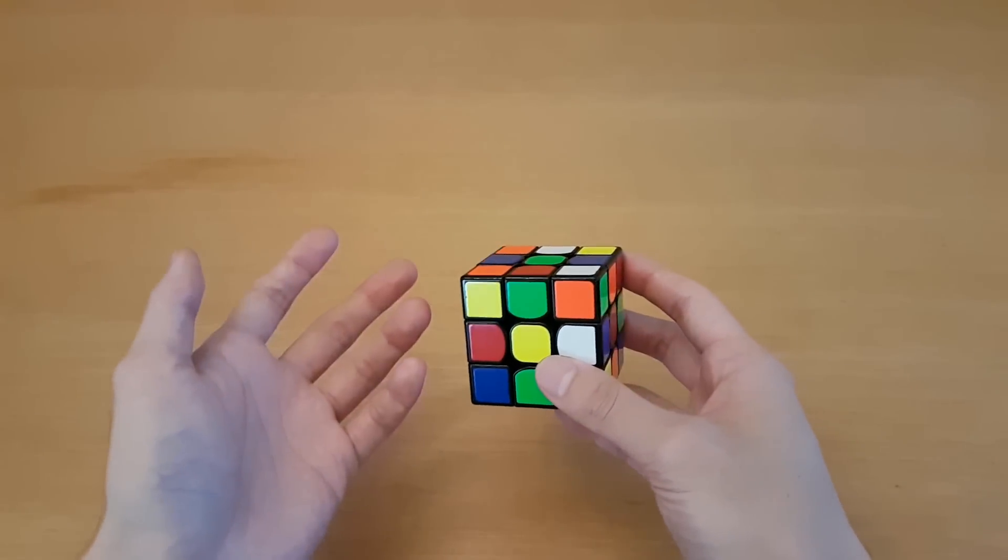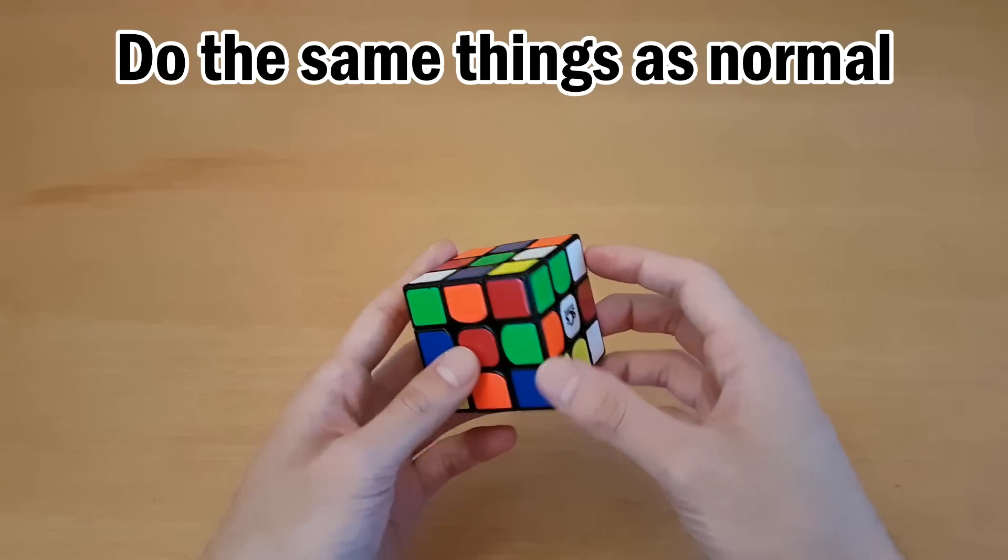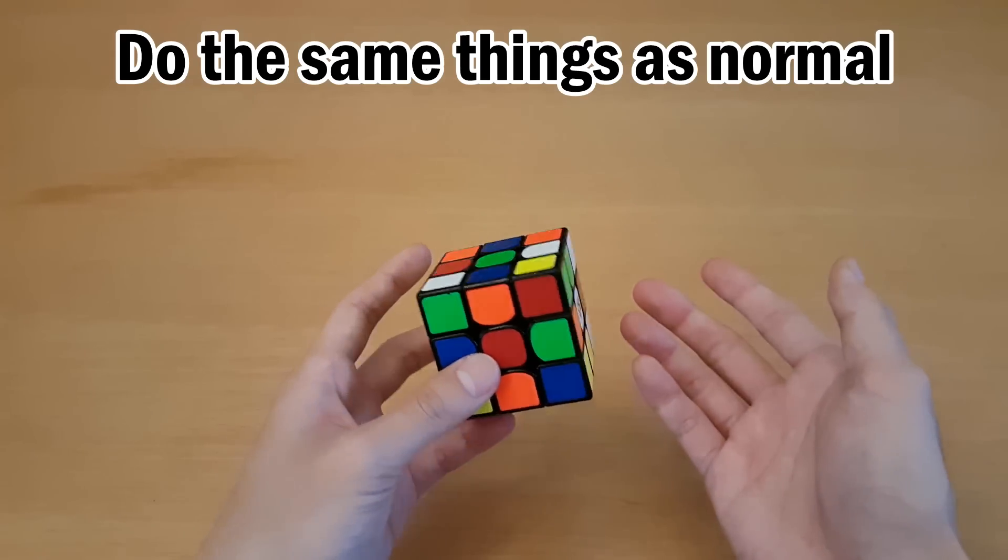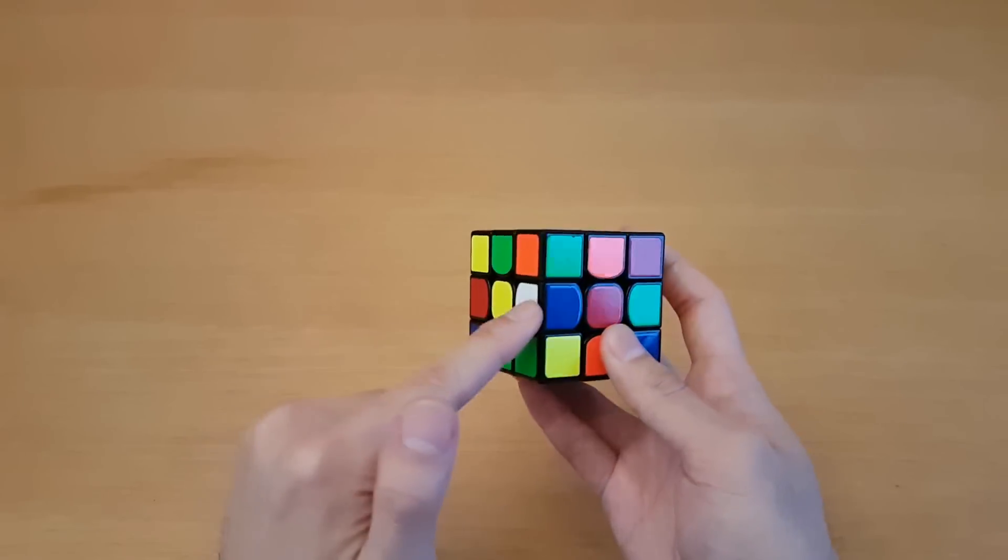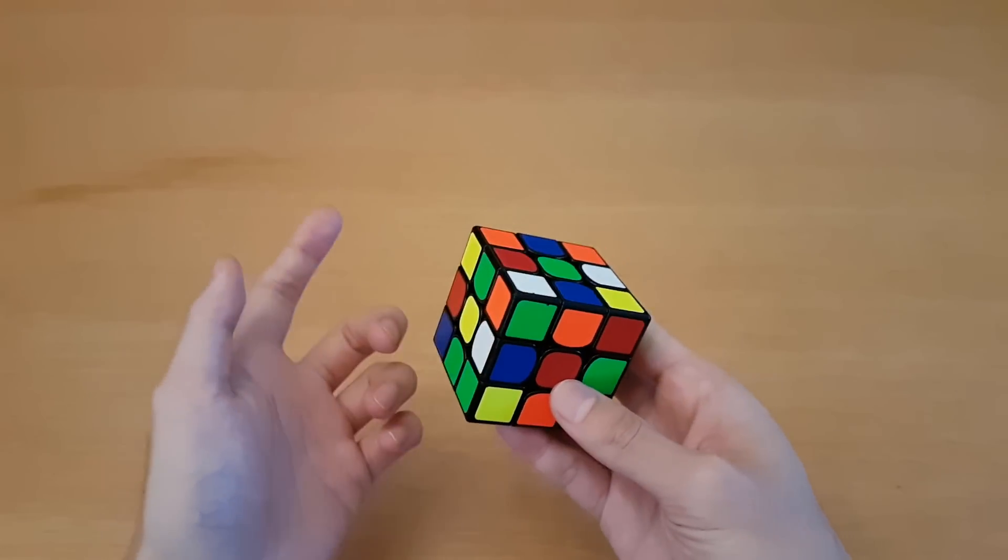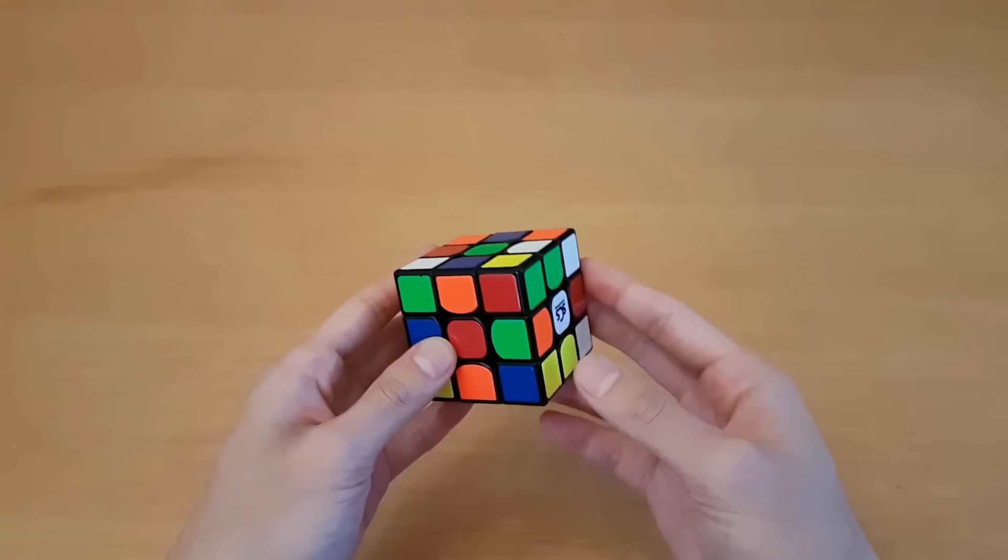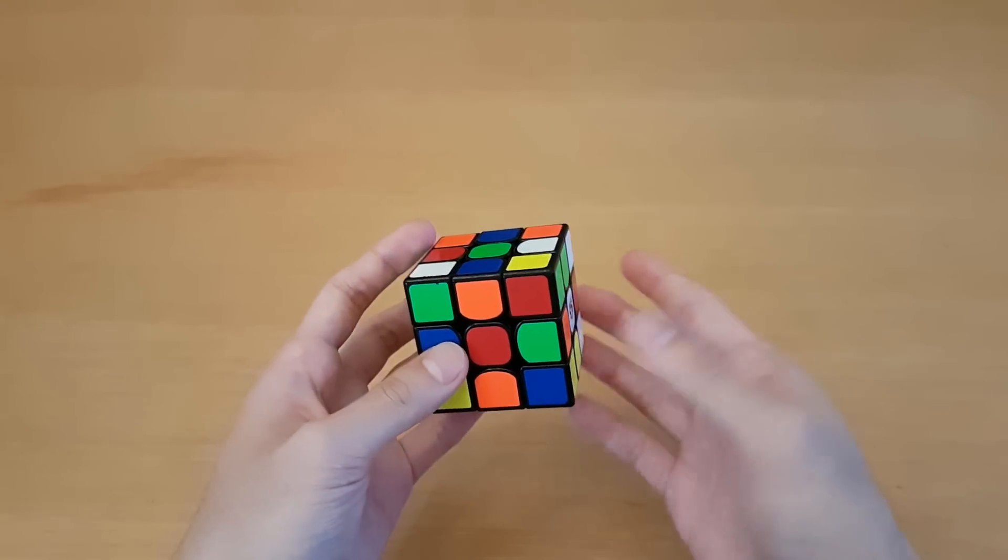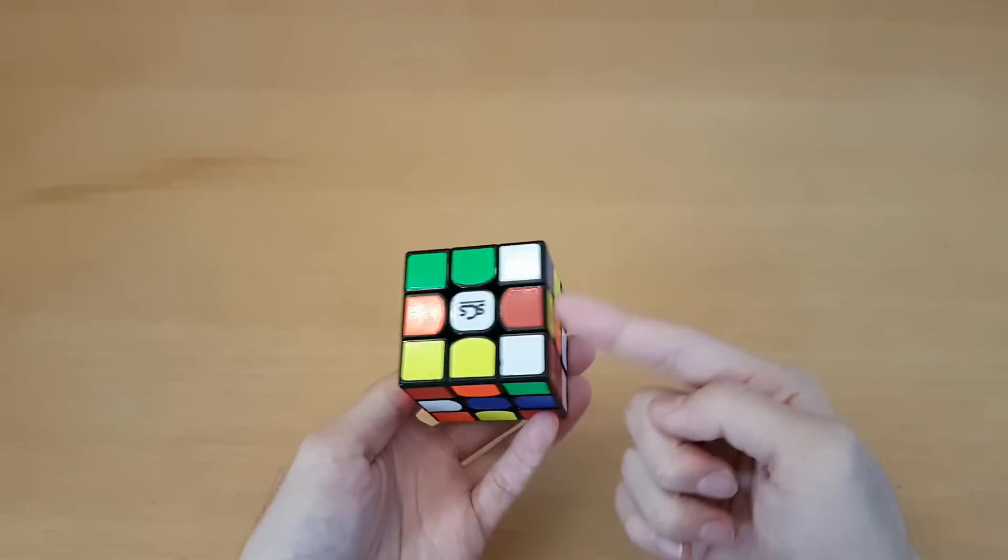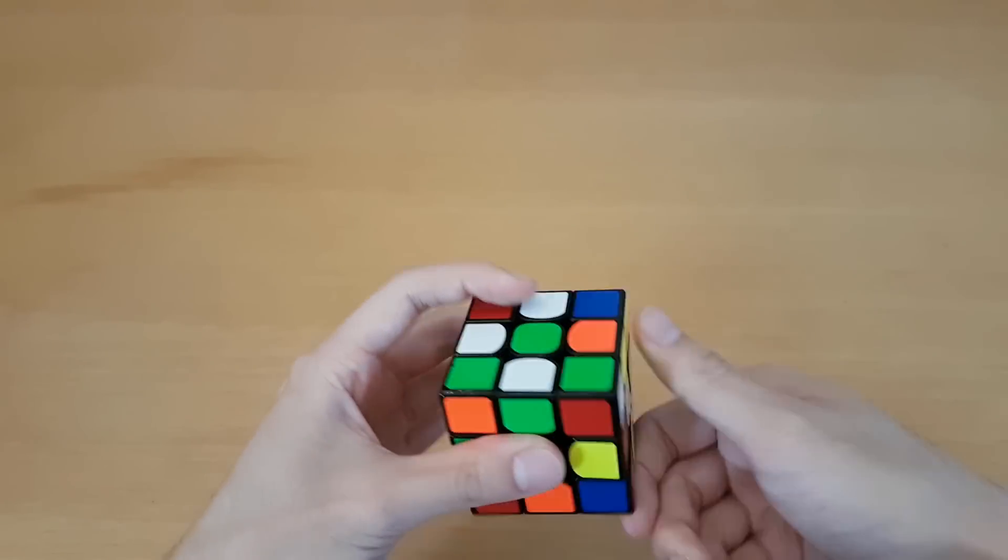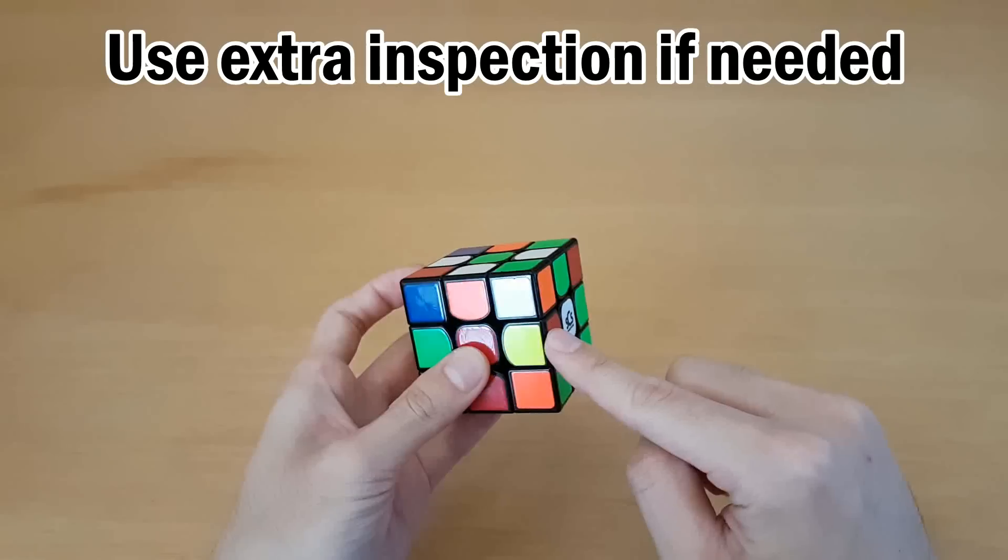Now no matter which level of color neutrality you decide to learn you should try to do the same things in your solves that you would normally do if you just did white cross. So for example here if I'm doing a blue cross and I'm trying to look for first f2l pair because I do that in my regular solves, then I'll do it for blue cross as well. So here I see that this corner is going to end up over here and this edge is going to end up over here. So then I'm going to do this right away.